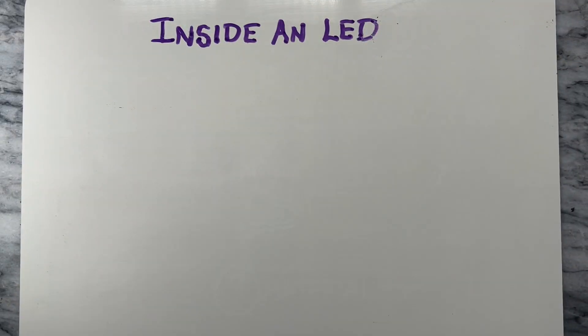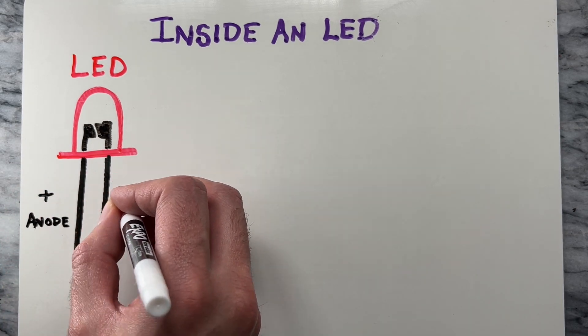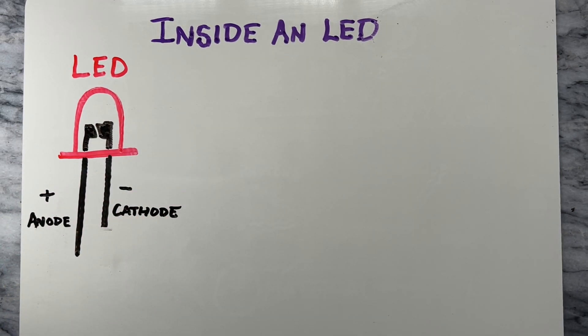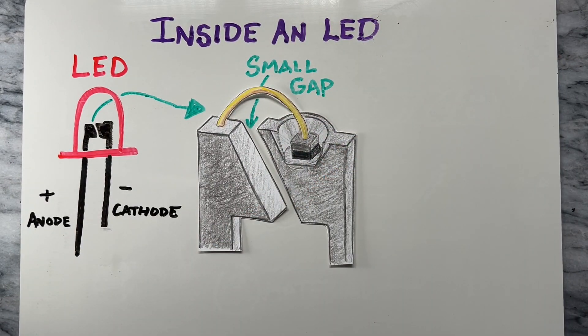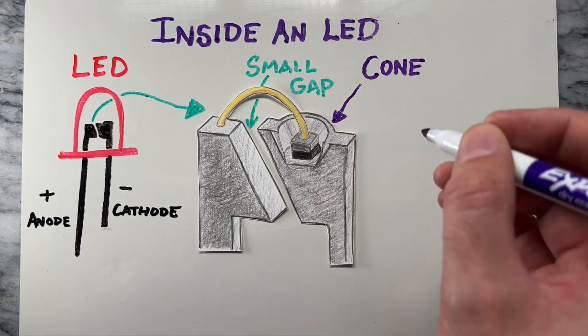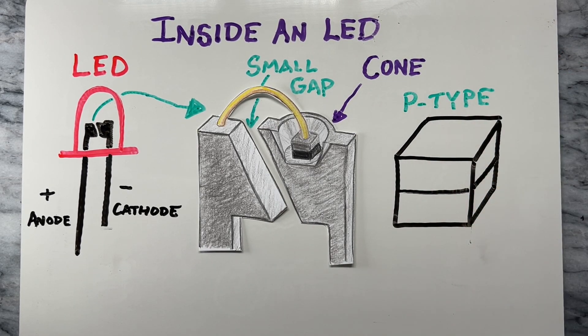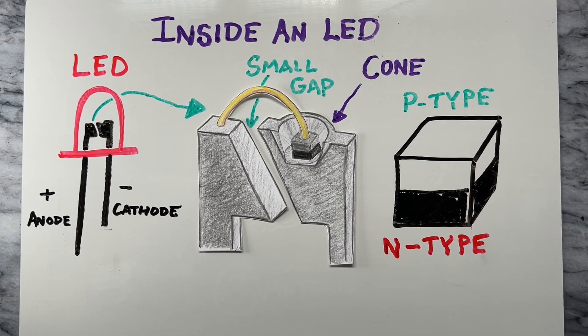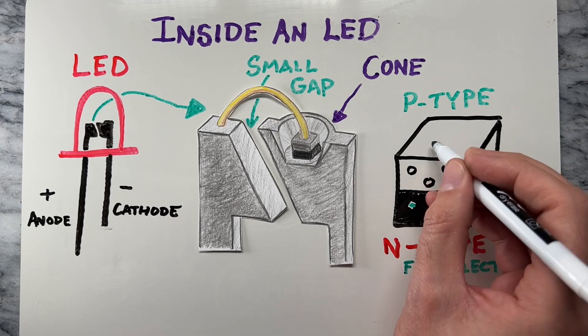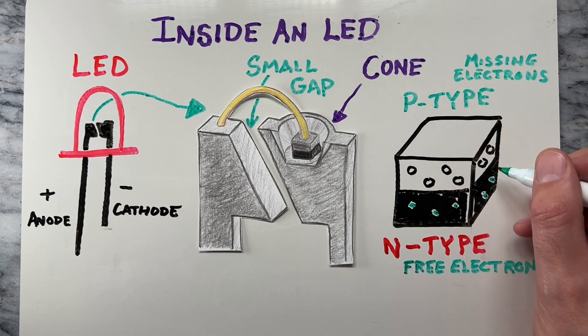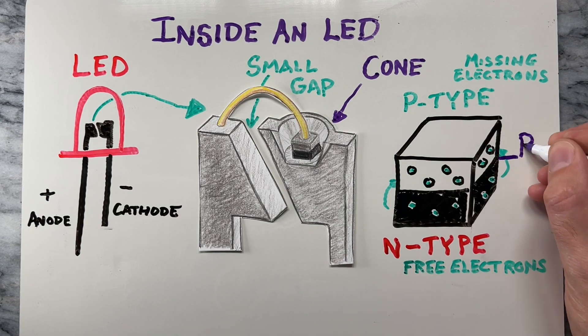Inside an LED, there are two metal leads which connect to the main body. The longest is the anode, and the shortest is the cathode. The leads have a metal plate at the end, and they are separated by a small gap. There is a cone shape where there is a semiconductor material made from a layer of N-type, with a layer of P-type material. The N-type layer has lots of free electrons, and the P-type is missing some electrons, but it has lots of holes that electrons can sit in. This forms a P-N junction.